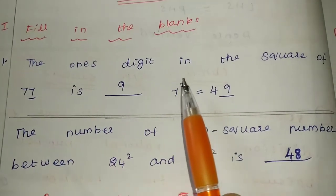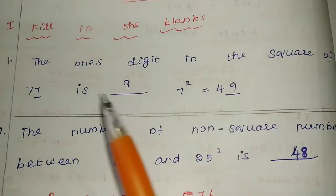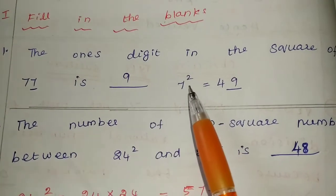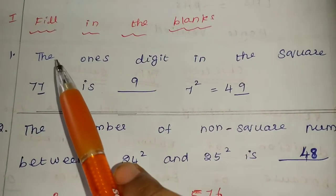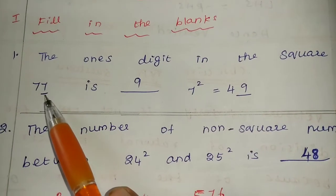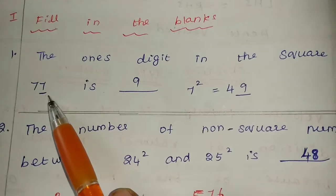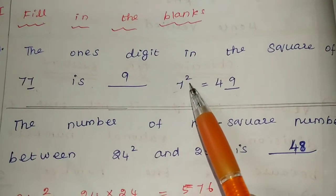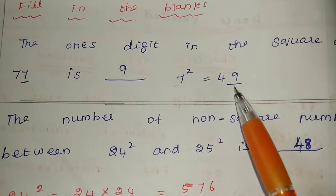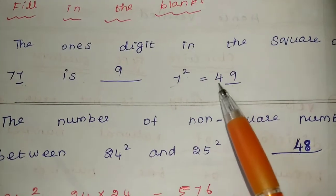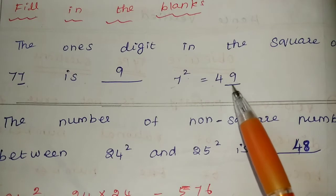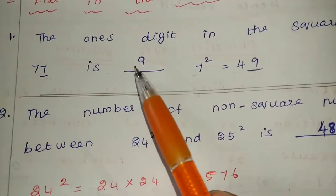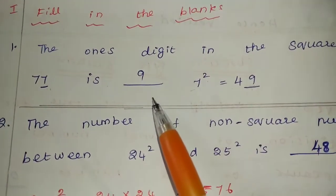See, the ones digit in the square of 77 is dash. The ones digit in 77 comes from 7. So what do we get when we square 7? 49. So from 49, the ones digit is 9. The answer is 9.